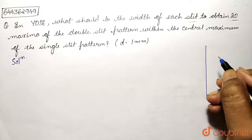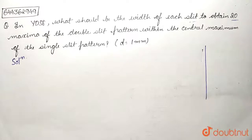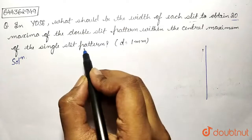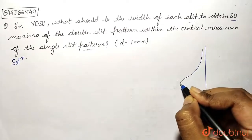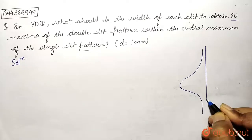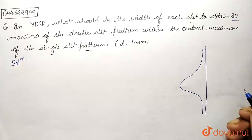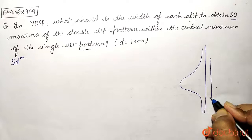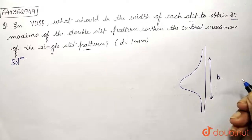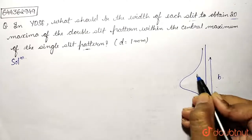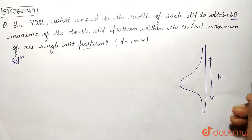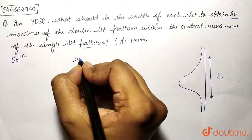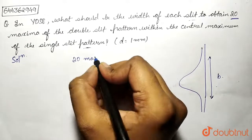This is the screen, and we are obtaining on the screen the maxima for the single slit experiment. Suppose this is the maxima we have obtained from the single slit — suppose this width is b. Now in the same width we need to obtain 20 maxima by double slit experiment.